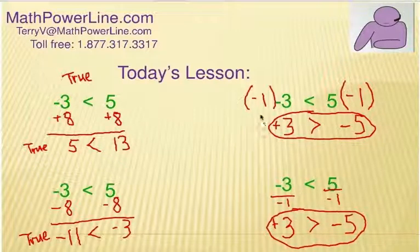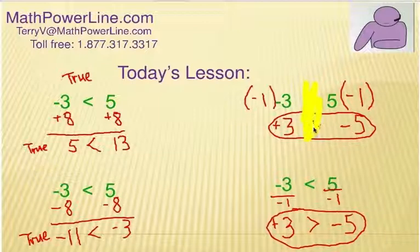So the reason for the rule is because we are switching signs on the numbers, which makes the relationship the opposite. And that's why we have to switch the inequality symbols. Less than becomes greater than in these two cases here.